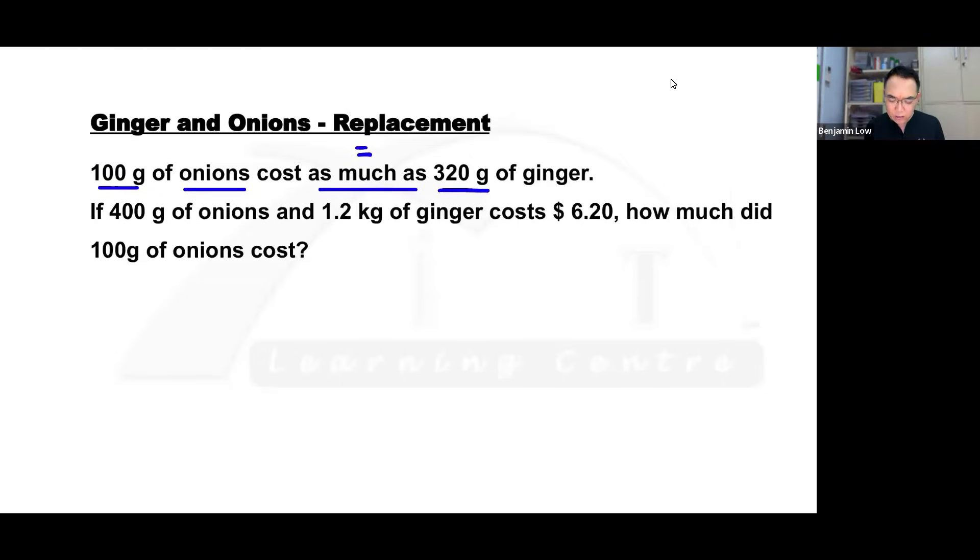The question states: 100 grams of onions cost as much as 320 grams of ginger. Then it says 400 grams of onions and 1.2 kilogram of ginger in total, and 'and' means plus for the younger ones, costs $6.20. So the question is, how much did 100 grams of onions cost? Let's begin.